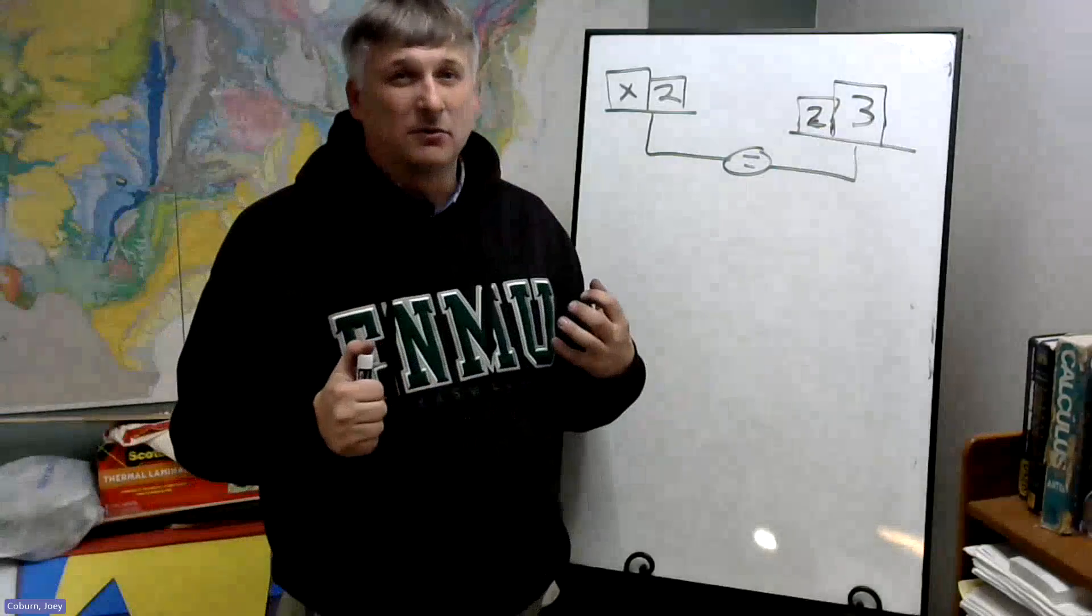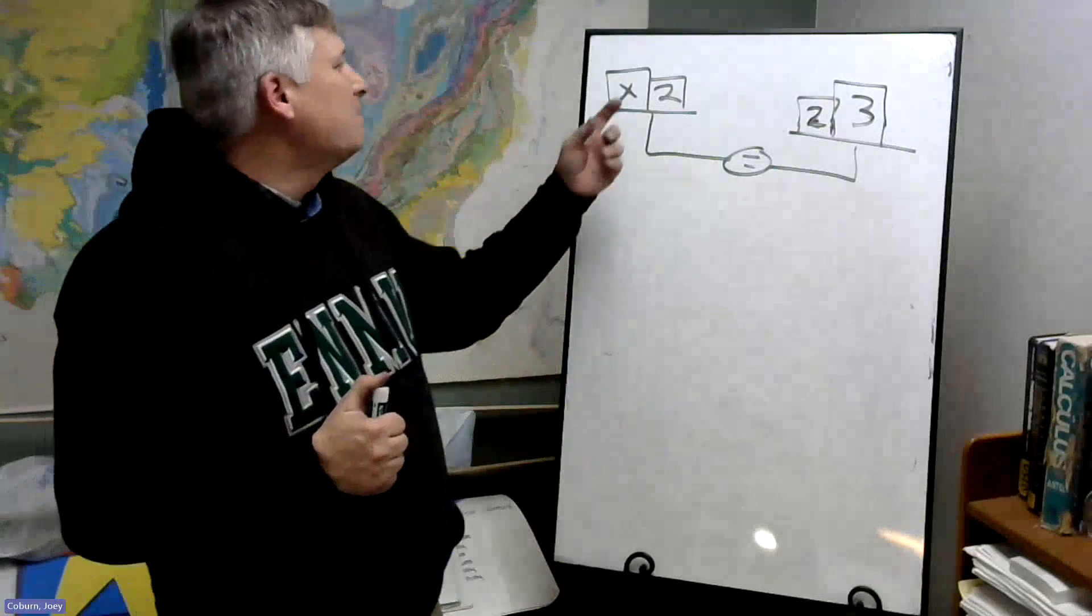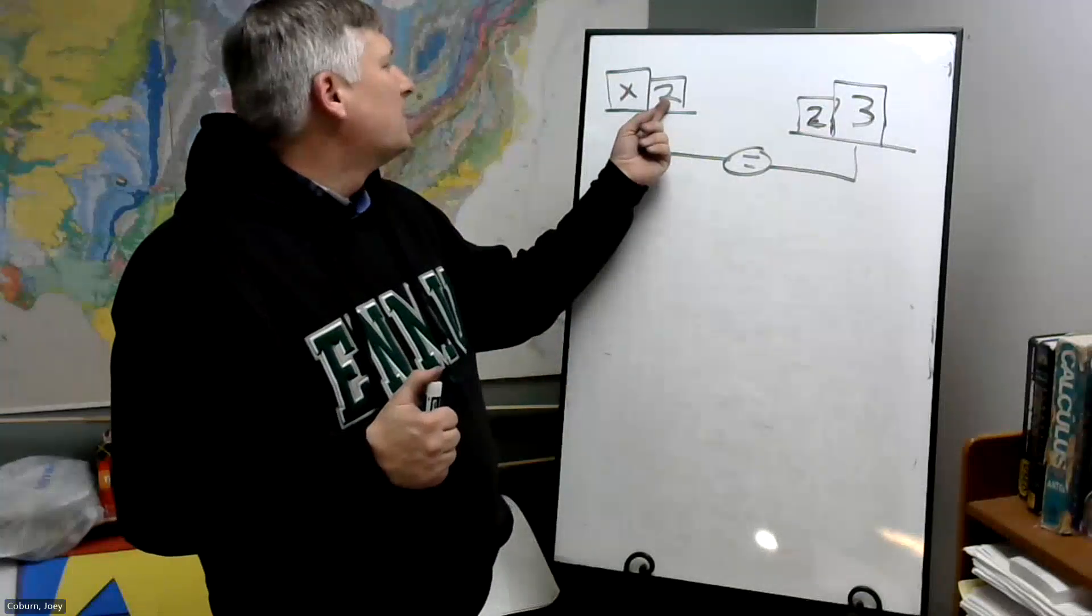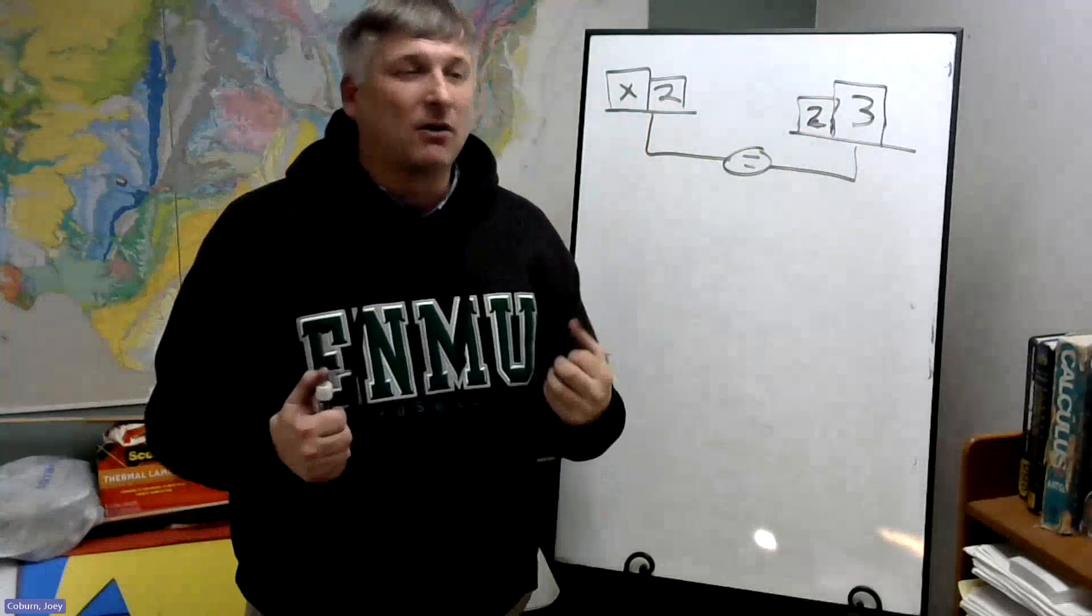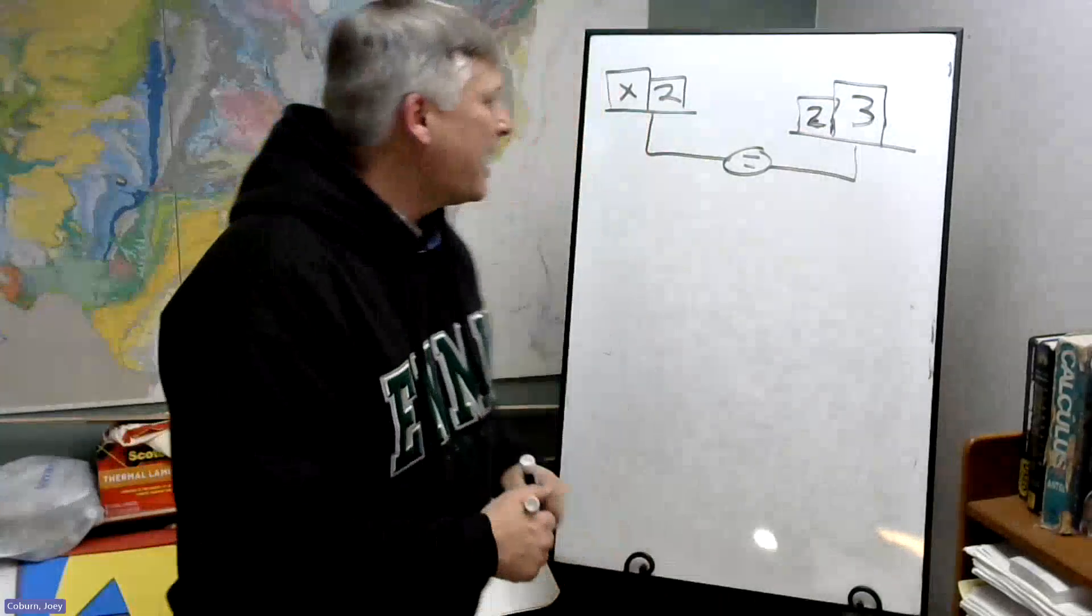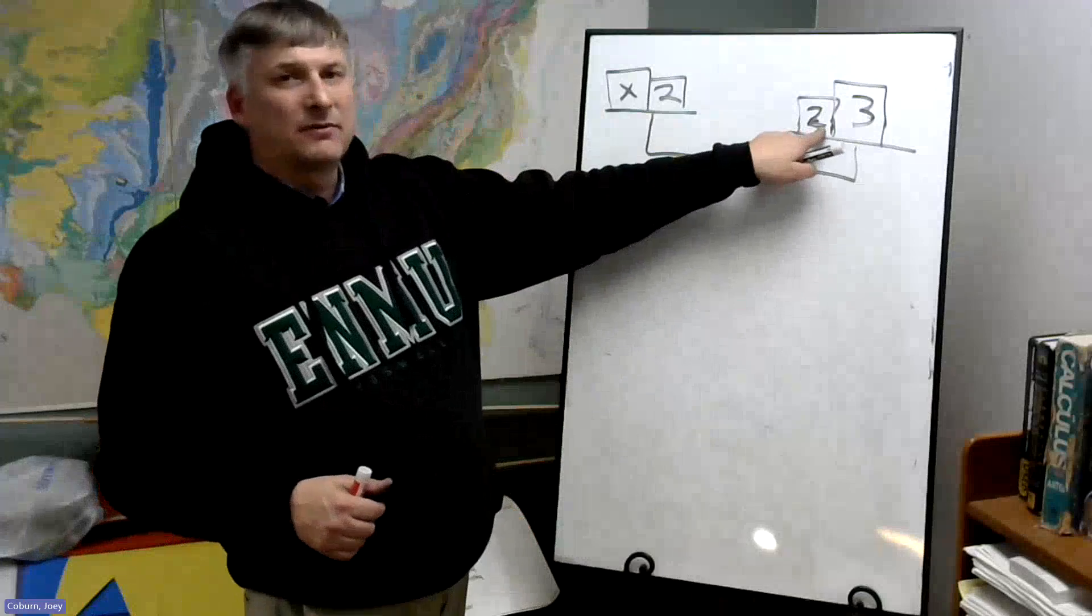Well, this is the thing we can do. We can remove two pounds here and X will be by itself. But if we do that, we have to remove two pounds on the other side.